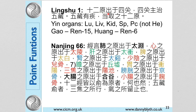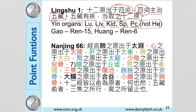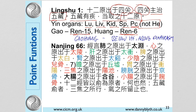A quick bit of history. Ling Shu Chapter 1, the Spiritual Pivot, mentions the 12 source points, referring to the four gates — the wrists and the ankles — as used to treat the five Zang, the five Yin organs. The 12 source points listed were Lung, Liver, Kidney, Spleen, and Pericardium — notably not the Heart; Pericardium 7 was listed as the Yuan source point for the Heart. Also listed were Ren 15 for the Gao and Ren 6 for the Huang. The Gao Huang is the area below the heart and above the diaphragm where chronic disease was said to linger — a Gao Huang disease was considered incurable, and Bladder 43 (Gao Huang Shu) is used for very chronic disease.